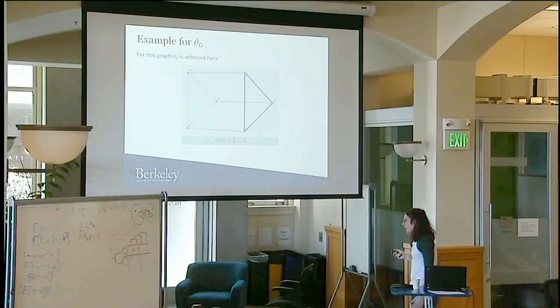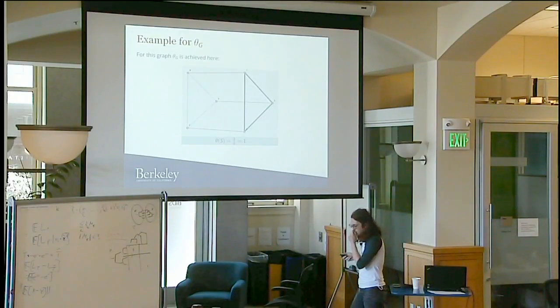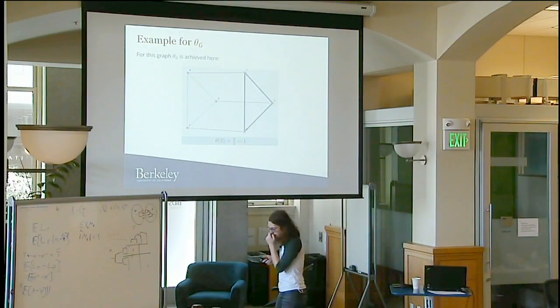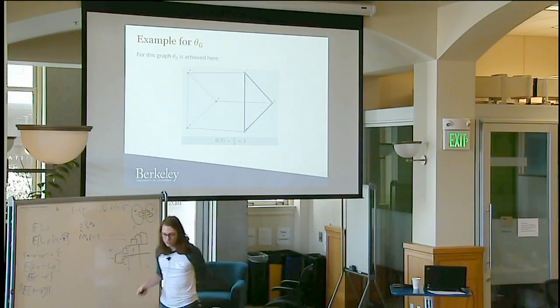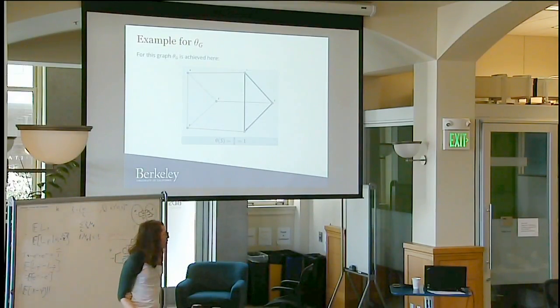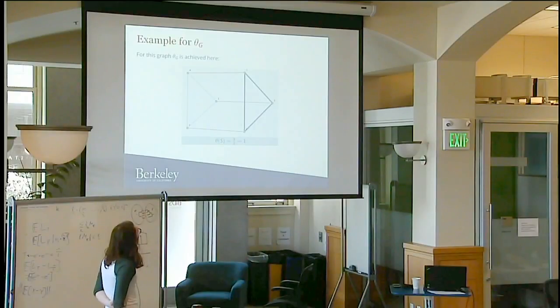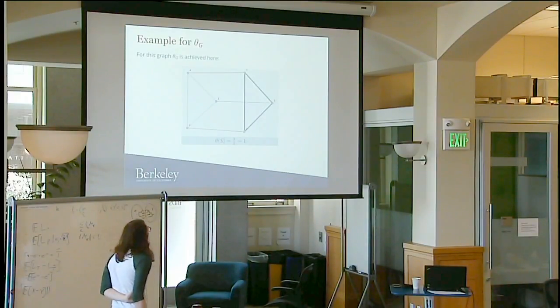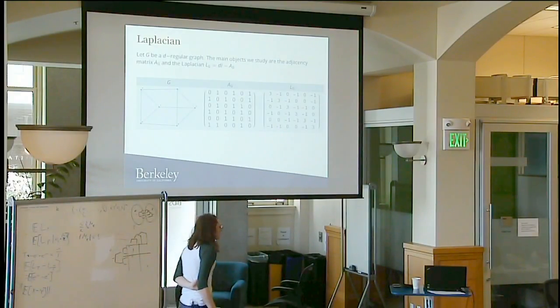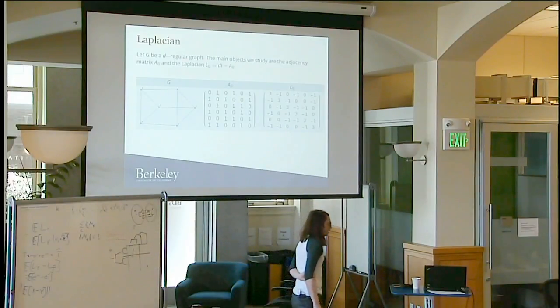So how do we find quickly a nice subset of the graph that has really low isoparametric ratio? The idea will be to relate it to linear algebra.